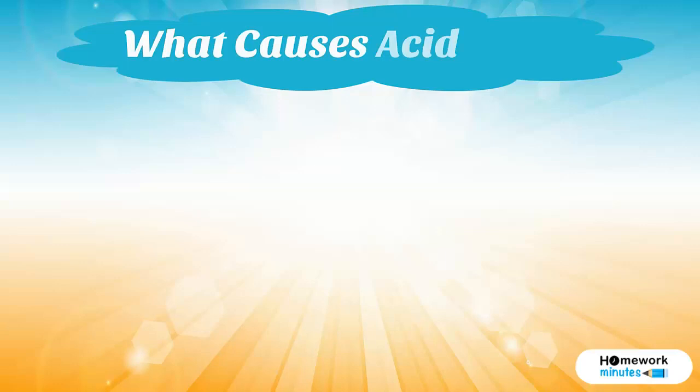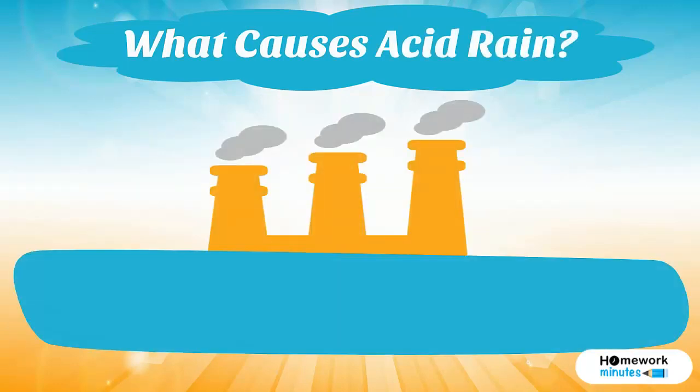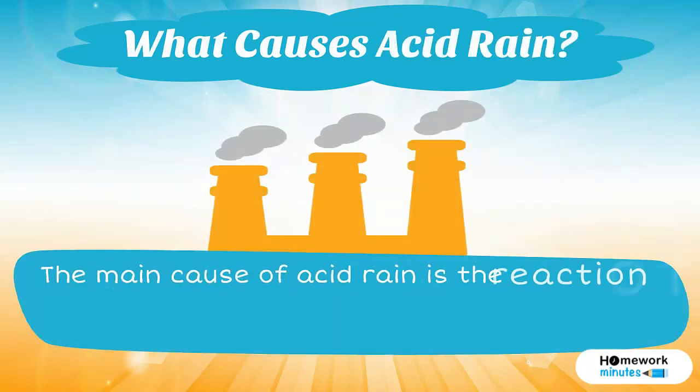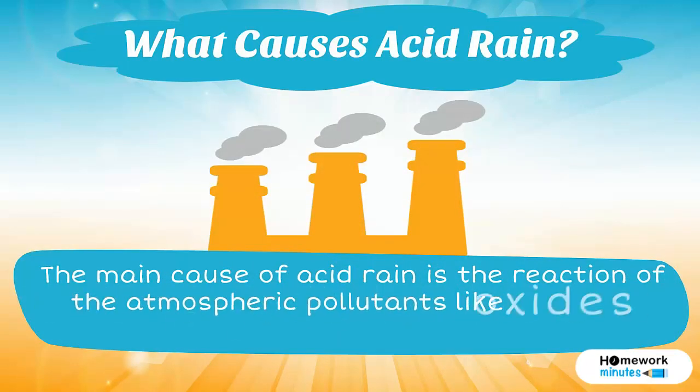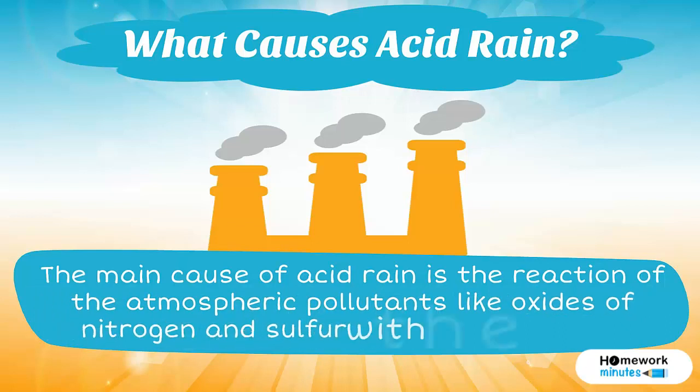What causes acid rain? The main cause of acid rain is the reaction of atmospheric pollutants like oxides of nitrogen and sulfur with the rainwater.